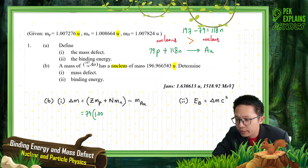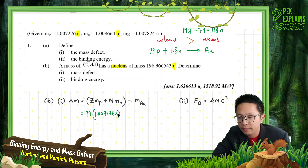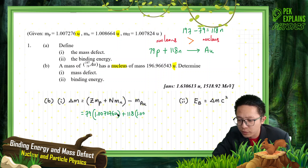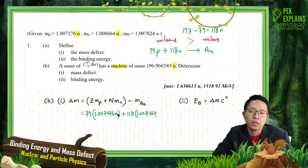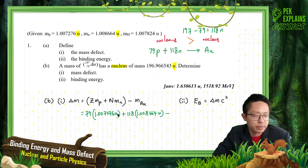Substitute all the values in atomic mass units. Note: if you're not using SI units, you must write down the unit explicitly, otherwise marks will be deducted. Then add 118 multiplied by the mass of the neutron, which is 1.008664 atomic mass units. The mass of the proton and neutron can be found in the list of constants provided.